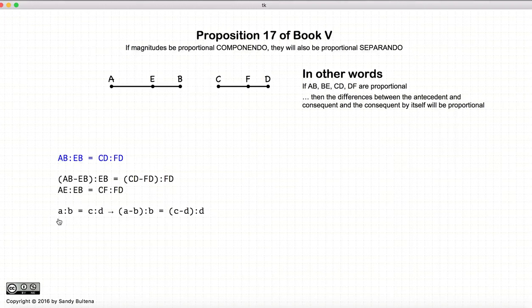if we have two ratios a to b and c to d that are equal, then the separando ratio, a minus b to b will also be equal to c minus d to d. So this I find, personally, a simpler way to view what this proposition is trying to prove.